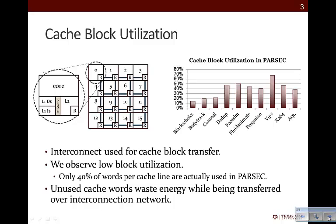That leads to the question: what is the interconnect actually used for in modern chip multiprocessors? As it turns out, in modern chip multiprocessors, the interconnect is predominantly used for transferring cache blocks between different levels of the cache hierarchy system.